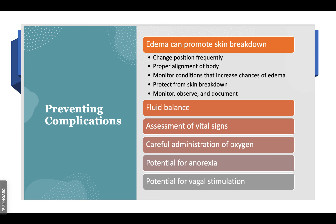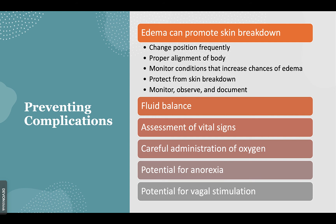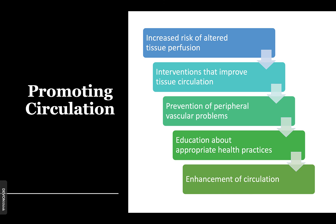Any place that has edema, the skin can break down and become ulcerated. Changing positions frequently is really important. When patients are fluid overloaded, sometimes they end up weeping fluid all over — making sure you're assessing vital signs and monitoring oxygen levels is key. Anytime there is lack of blood flow and oxygen, that's when problems begin. Prevention of peripheral vascular problems includes education, talking to patients about what they can do to decrease their risks, and non-invasive to invasive measures to enhance circulation.